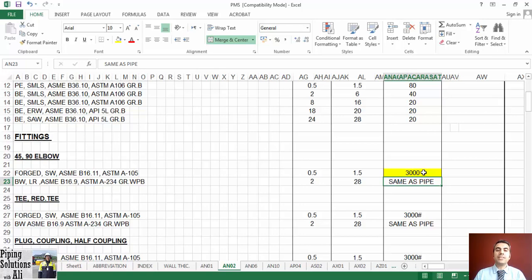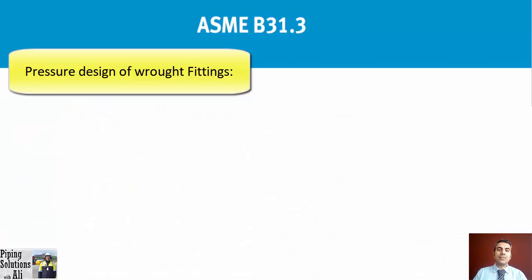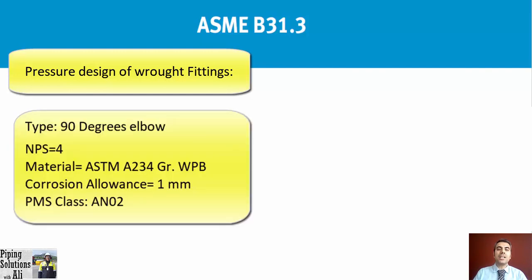If we have a forged fitting with threaded connection, the same instruction shall be followed for determining the class. The next example is the pressure design of a wrought fitting with the following conditions: type 90-degree elbow, NPS equals 4, material ASTM A234 Grade WPB, corrosion allowance one millimeter, PMS class AN02.